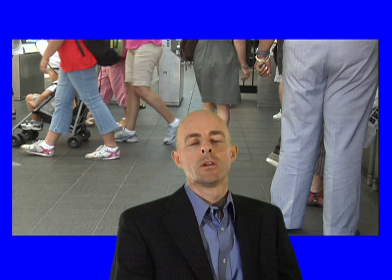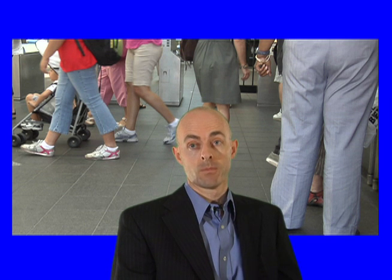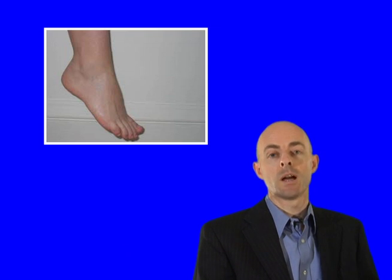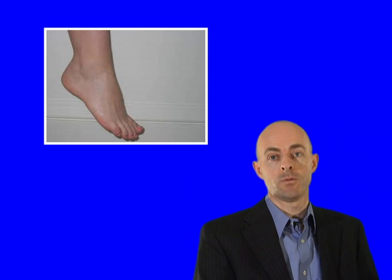Functional leg length discrepancies are far more common than structural. With functional leg length discrepancy, the bones and joints may not measure shorter, but there's an imbalance due to a muscle contraction or a compensation — for example, a unilateral plantar flexed foot.